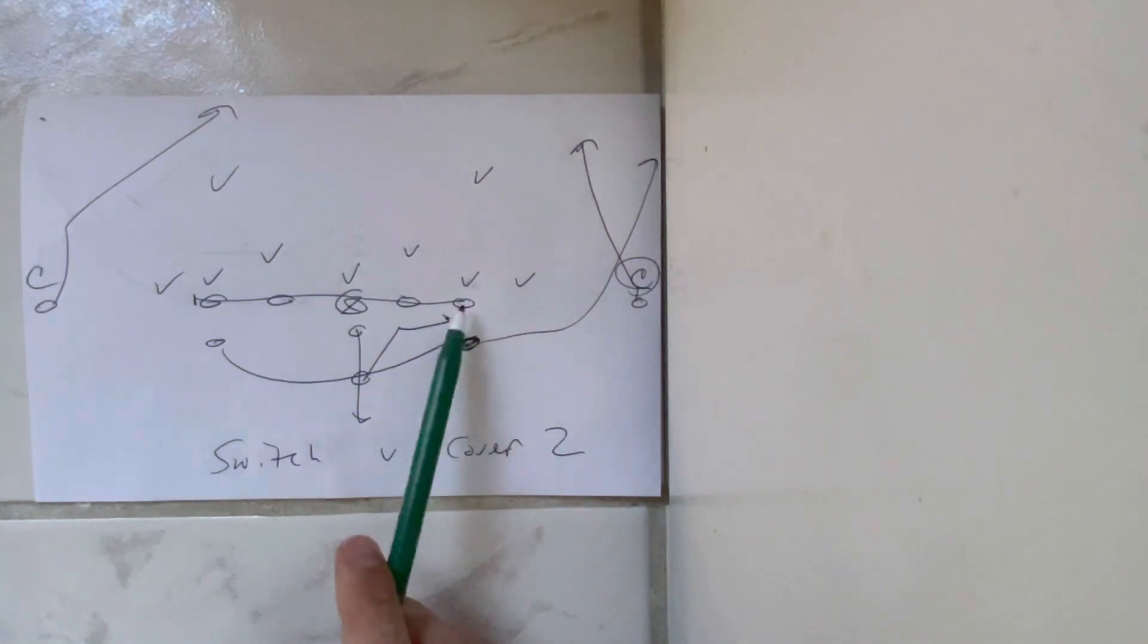So what's going to happen is the line, if you go switch right, the line slides away from the call. The B-back touches the guard and blocks the first threat from the guard out, while the backside A-back runs the pitch and blocks the first threat off the B-back.